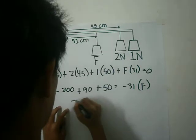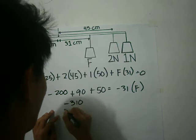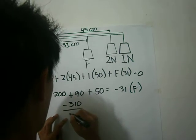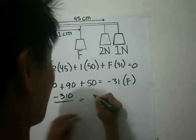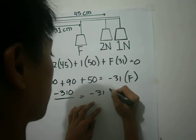Add all this. Then we will get negative 310 equals negative 31 F.